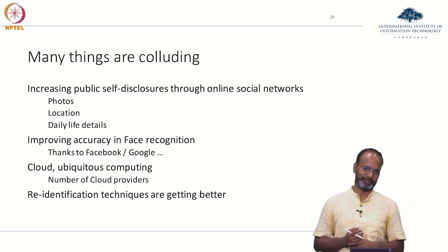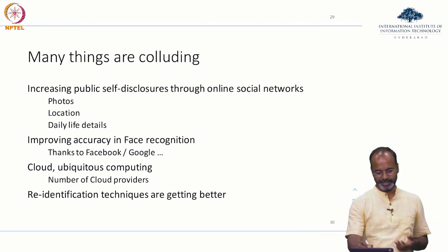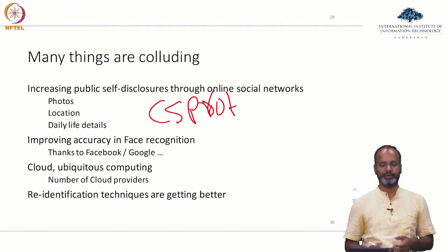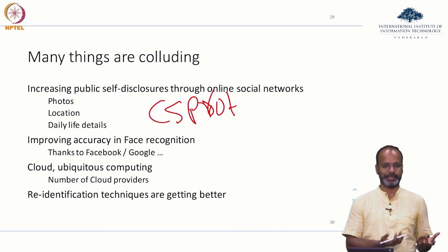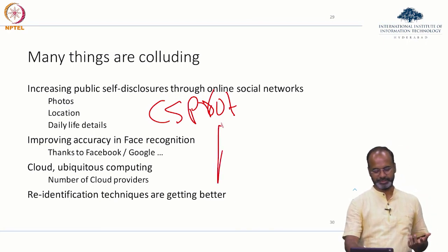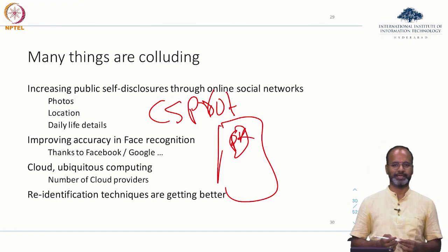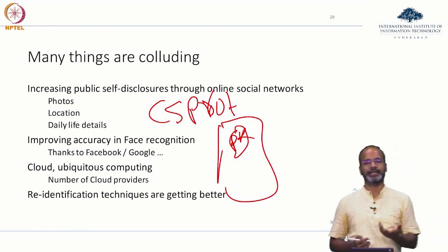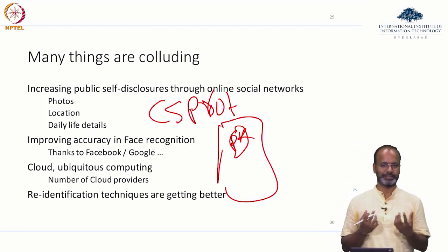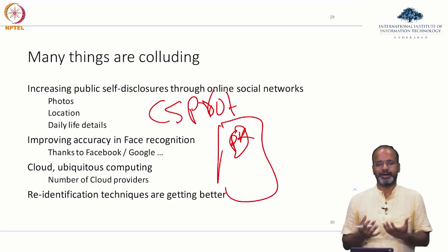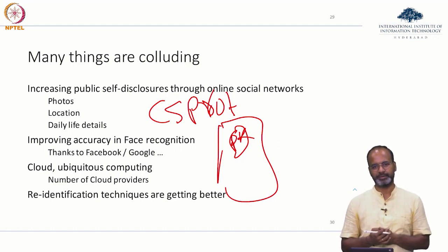Re-identification techniques are also getting better. If you have a username like 'csprof' as an account on Reddit, can you actually de-identify the csprof? If you have a picture in which PK is there, can you identify PK in that picture when that picture does not explicitly state that PK is in it? Those are the things you can actually get better at — over the years the technologies have become better to address this.